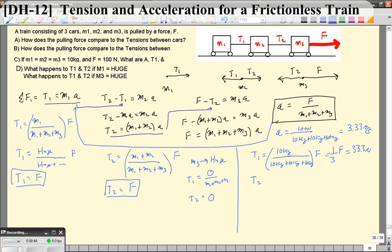Tension 2 is going to be equal to 10 kg plus 10 kg over 10 plus 10 plus 10 times F, which is going to give you two-thirds of the pulling force, or 66.7 newtons.